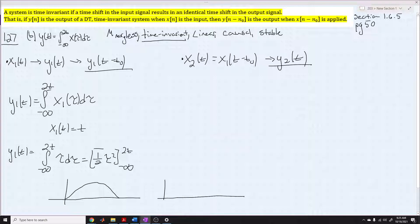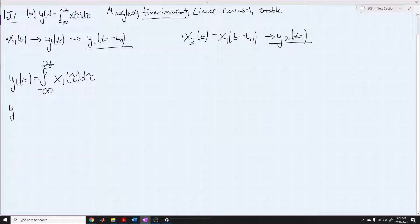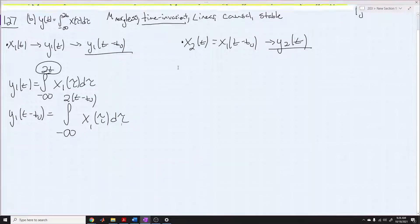Then, if we shift our output, we're going to get this. We're just moving it, right? And all this boils down to is that when we do shift y1 by t0, we're only applying that t0 right here. So we have the integral from negative infinity to 2t minus t0, and it's still going to be x1, and it's still going to be of tau, and it's still with d tau.